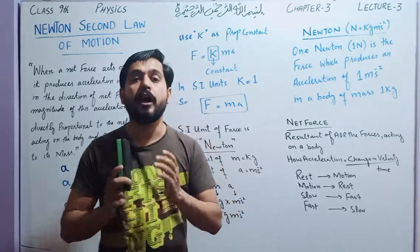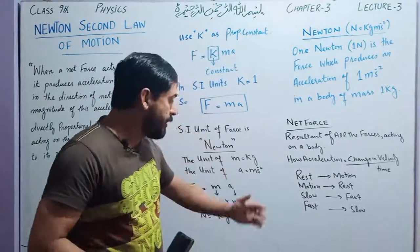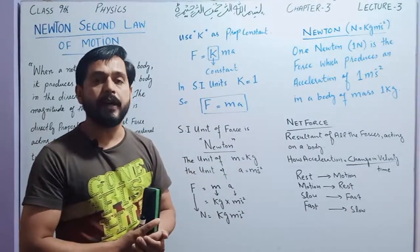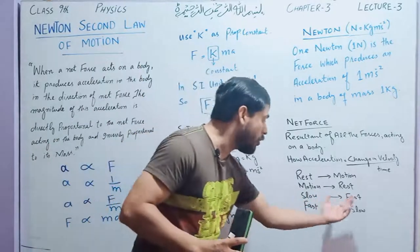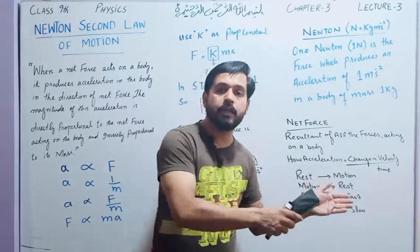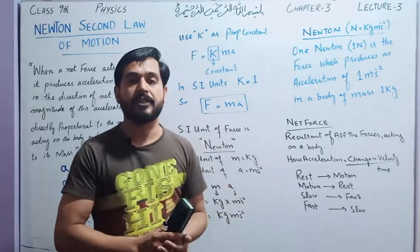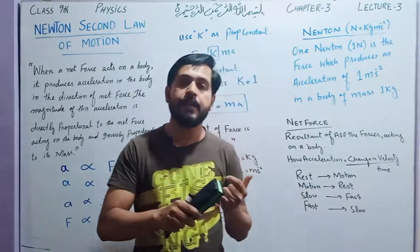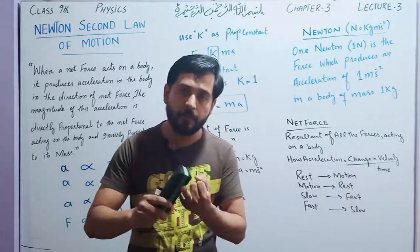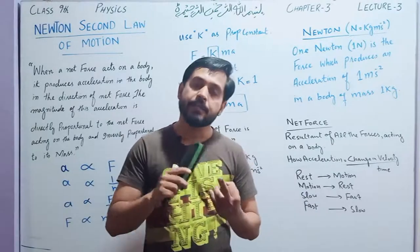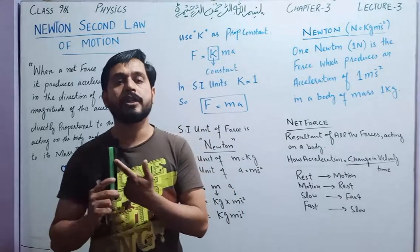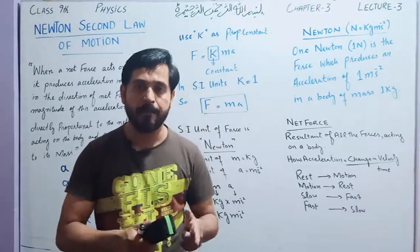If a body has a slow speed — say 10 m/s — and after some time, say 10 seconds, its velocity becomes 20 m/s, acceleration is produced. This is called positive acceleration, as velocity or speed increased. Similarly, if a body was moving fast at about 50 km/h, and after 1 or 2 minutes it slows down to 20 or 30 m/s, this decrease in velocity is called deceleration or negative acceleration. So remember: rest to motion — force and acceleration produced; motion to rest — force and acceleration produced; slow to fast — force and acceleration; fast to slow — force and deceleration.